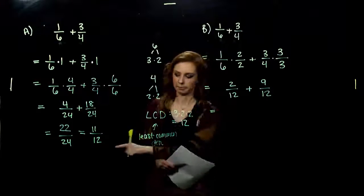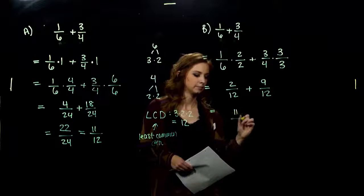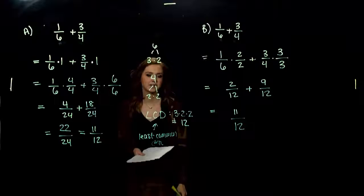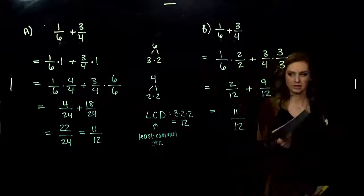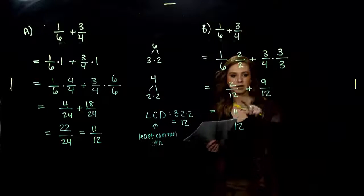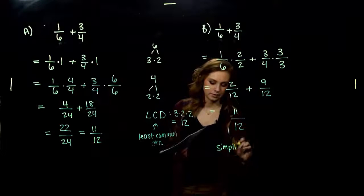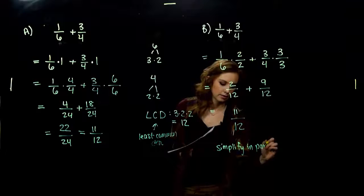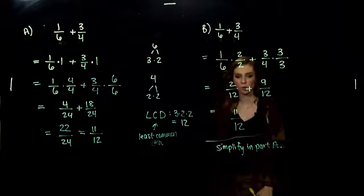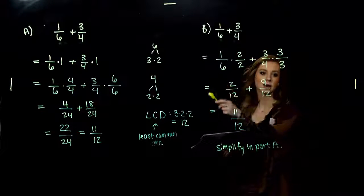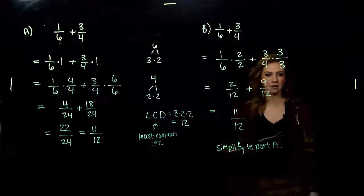We get the same answer — 11 twelfths — but what didn't we have to do at the end? We didn't have to simplify. When we kept our LCD, we didn't have to simplify, but in Method A we did. So if we can help it, we want to run with the least common denominator because it's going to save us work if we're just a little bit mindful in the beginning. We need this skill later in algebra, so get comfortable using the LCD.